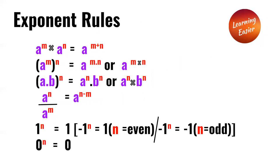Exponent Rules. A to the power of m times a to the power of n is equal to a to the power of m plus n. In parenthesis, a to the power of m, and outside the parenthesis to the power of n, is equal to a to the power of m times n.